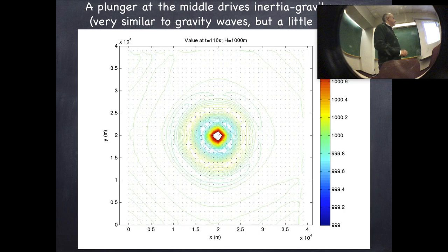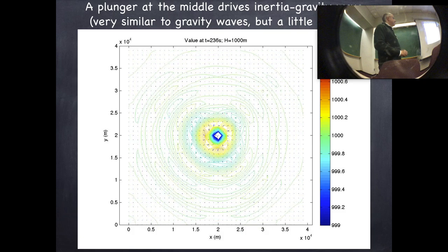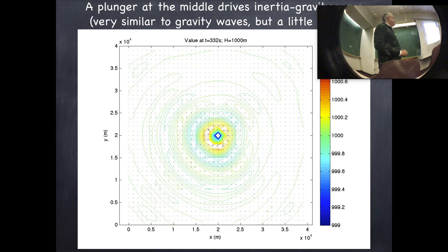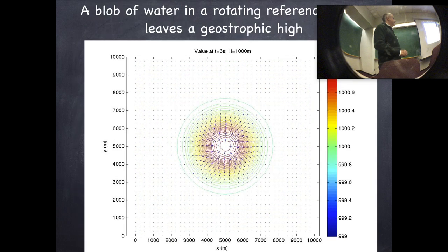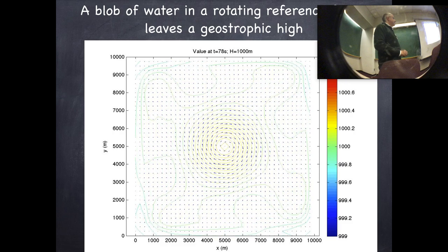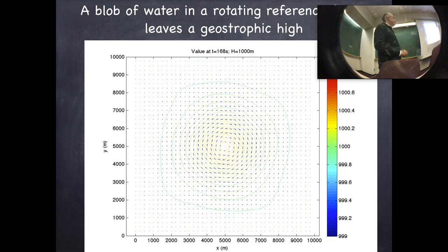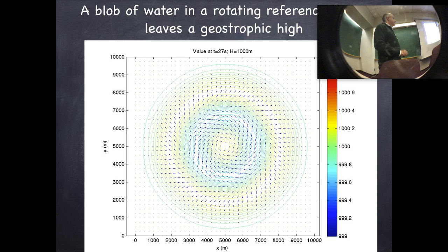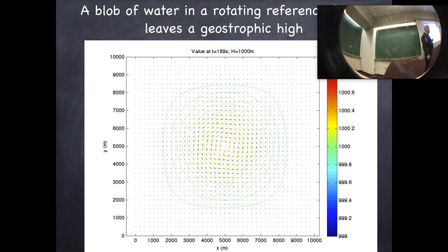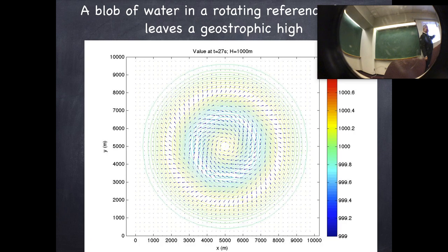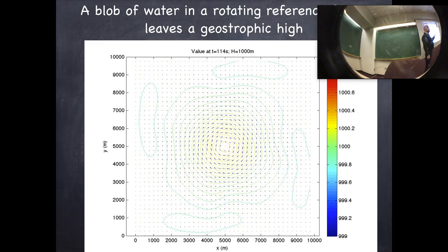This is the plunger problem where we force sea surface height up and down, and rotating surface gravity waves propagate outward. If we drop a blob of water instead, we get rotating gravity waves that propagate away. What's left behind is the geostrophically balanced state — in this case an anti-cyclone. In the geostrophic adjustment problem, we don't solve for the waves; we only solve for the geostrophically balanced residual.